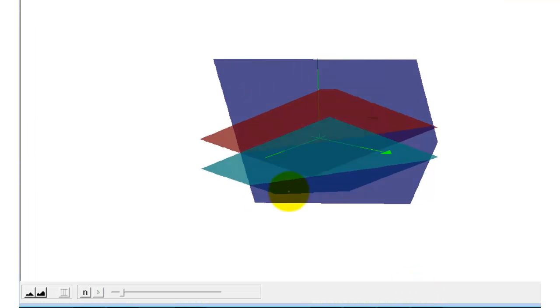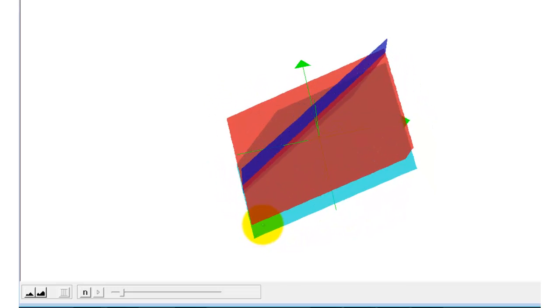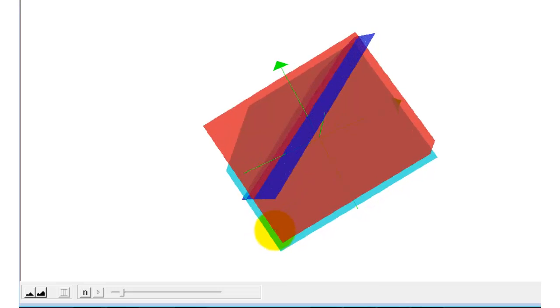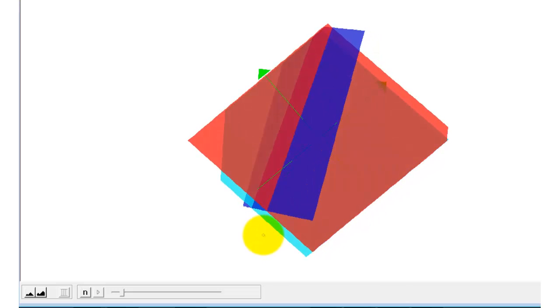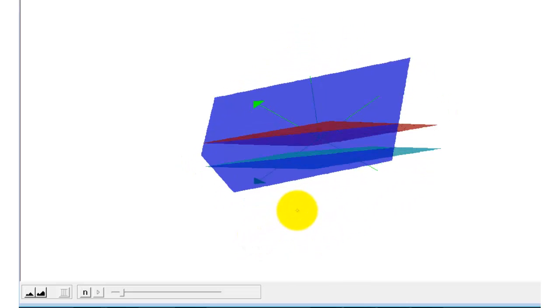Here's the graph of the three planes. Notice how because two of these planes are parallel, there aren't any points that are on all three planes. And therefore, we have no solution.